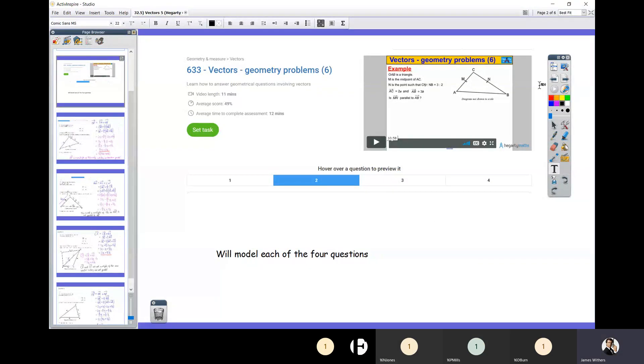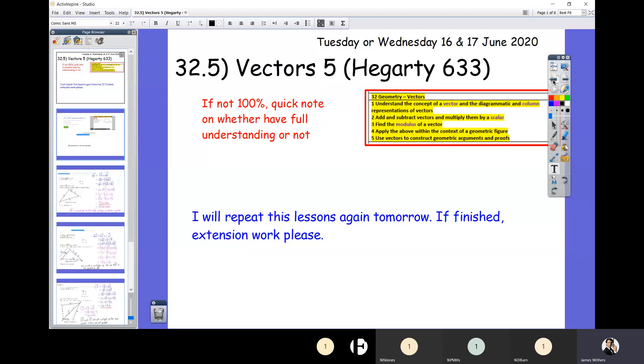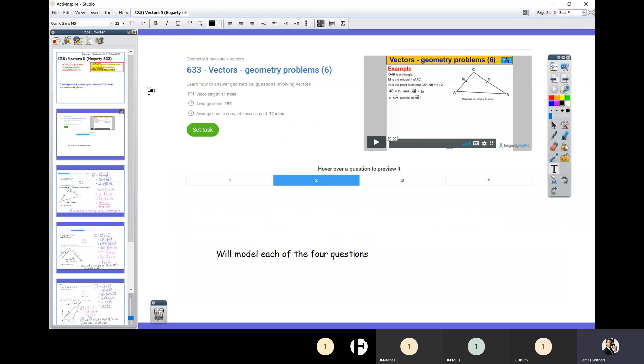Okay, so we are on our fifth lesson on vectors. If you don't get 100%, which is possible—this is not easy—as you upload it, just give me a little one-liner to say whether you see where you went wrong or you don't, please. This Hegarty 633 comprises four different questions, and they're all just slightly different. What they have in common is you are trying to decide whether the vectors are parallel or not. Now they are parallel if they are multiples of the same vector. So if one of them is, say, the vector a plus b, then the other has got to be two lots of a plus b, or six lots of a plus b, or half a lot of a plus b. It's got to be in the same direction—obviously that's what parallel means—but it doesn't matter whether it's longer or shorter.